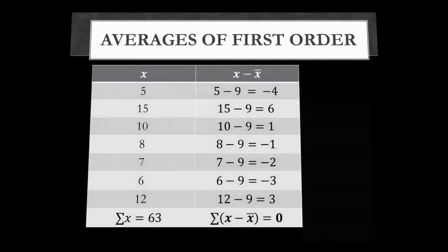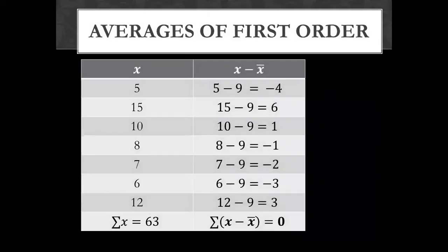5 minus 9, minus 4. 15 minus 9, 6. Then 10 minus 9, 1. Then 8 minus 9, minus 1. 7 minus 9, minus 2. 6 minus 9, minus 3. 12 minus 9, 3. Now, if we have x minus x bar column, how much total is coming? 0.